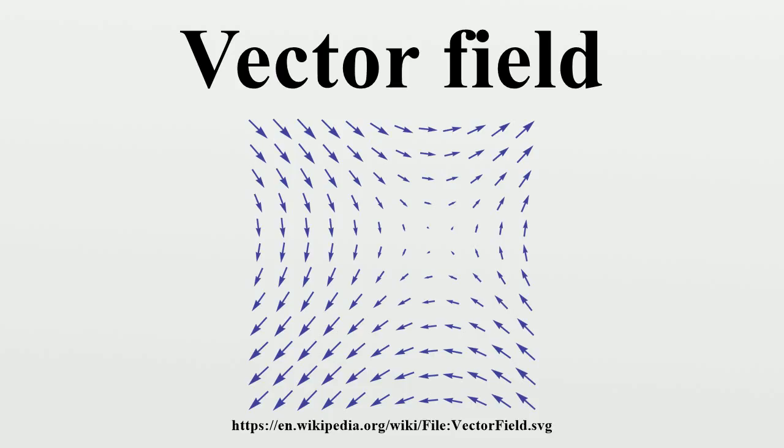Operations on vector fields: Line integral. A common technique in physics is to integrate a vector field along a curve, i.e., to determine its line integral. Given a particle in a gravitational vector field, where each vector represents the force acting on the particle at a given point in space, the line integral is the work done on the particle when it travels along a certain path.